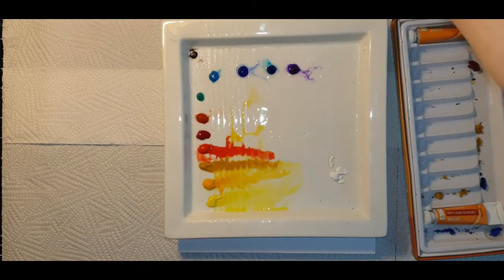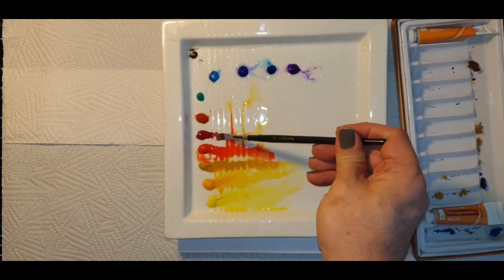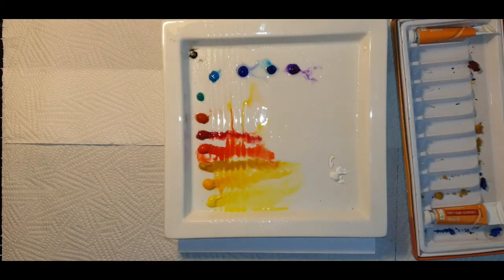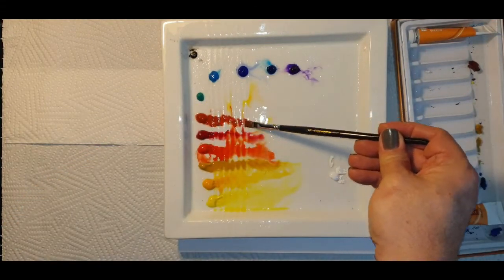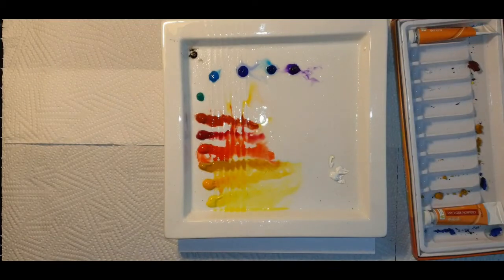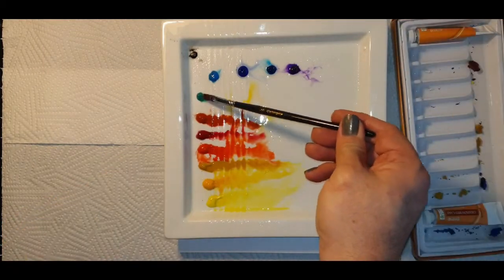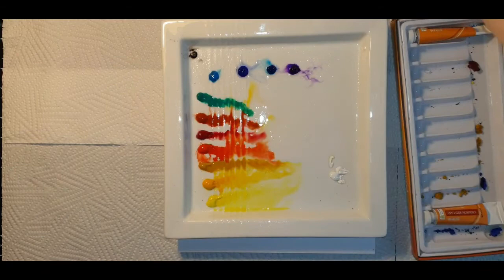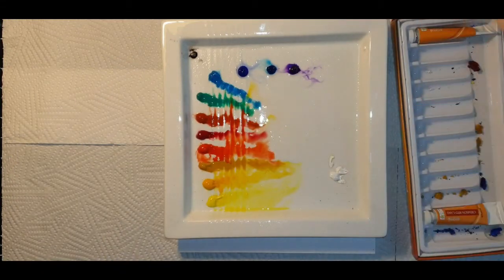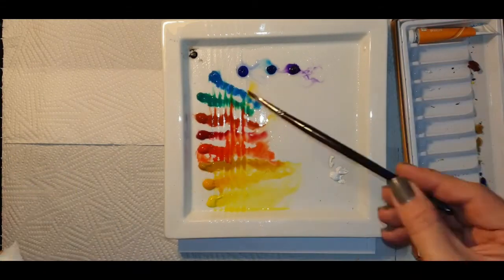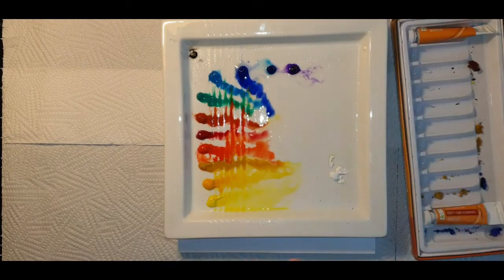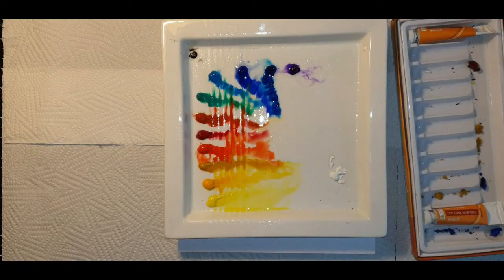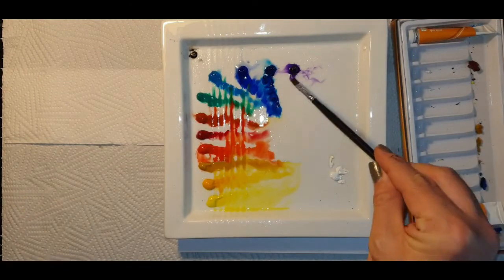At this stage I'm activating my paints with a bit of water so that it is easier for me to get it onto my practice page. As I'm activating my paints, I want you to start to think about what are your favorite colors. A good way to do that is to see what are the favorite colors that you like to wear, what are the favorite colors that you like to surround yourself with.